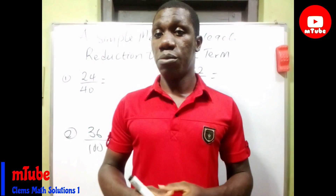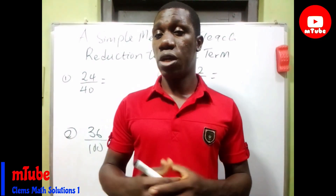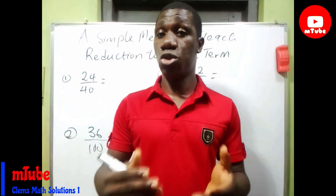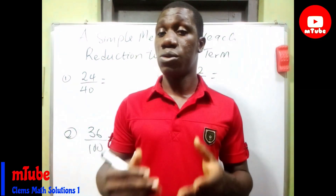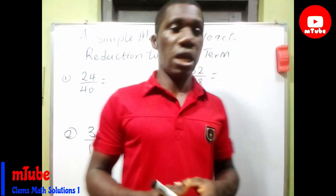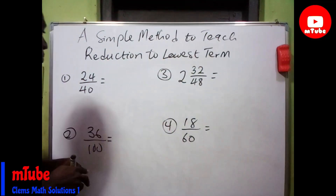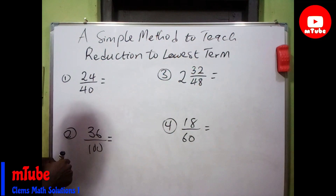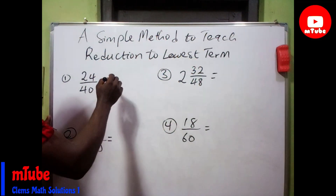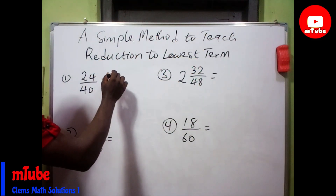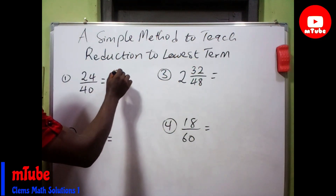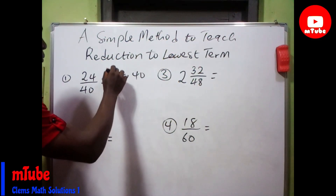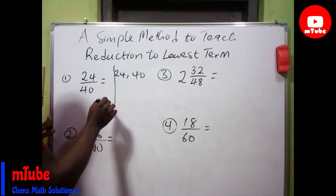In this video, I'm going to show you a short, very simple method you can teach them so as to avoid such mistakes. Here I have some examples. The first one is 24 over 40. So you teach them to write out 24 and 40 in this way and carry out the division.